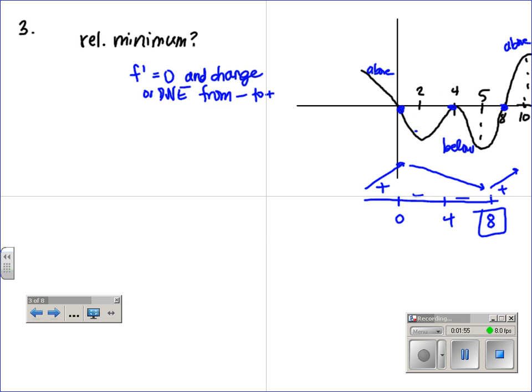Again, you can just look here and see where do I cross from below to above. Below to above. Negative to positive. Between down to up. So it's at x equals 8, which is choice e.